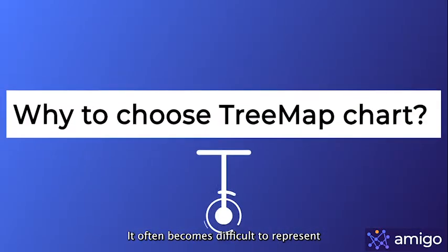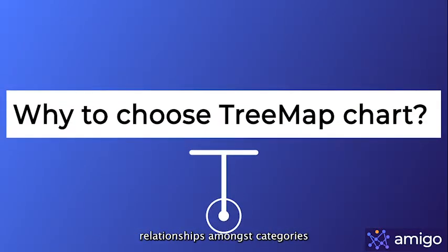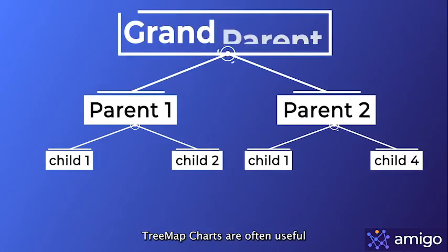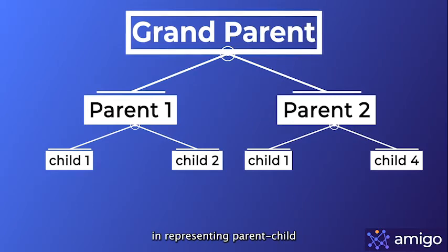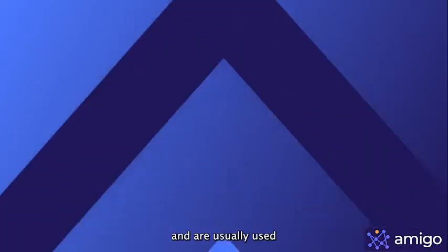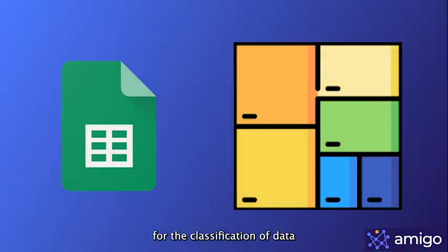It often becomes difficult to represent relationships amongst categories when working with lots of data. Tree map charts are useful in representing parent-child relationships between different data items and are usually used for the classification of data in Google Sheets.